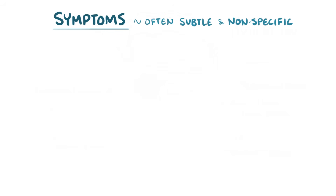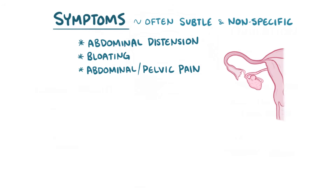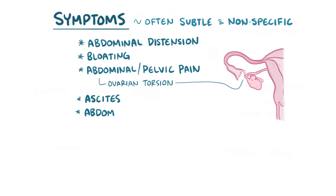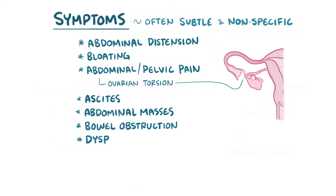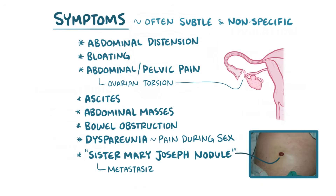Generally speaking, symptoms of ovarian cancers can be subtle and nonspecific. Common early symptoms can include abdominal distension, bloating, as well as abdominal or pelvic pain, which can come from an ovarian torsion, where the ovary gets twisted. Occasionally, ovarian tumors can cause ascites, abdominal masses, bowel obstruction, or dyspareunia, which is pain during sexual intercourse. A classic finding is a Sister Mary Joseph nodule, which happens when the cancer metastasizes to the umbilicus, and this finding is often linked with a few types of cancer, one of which is ovarian cancer.